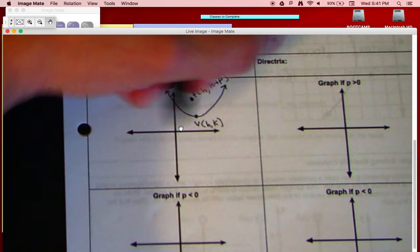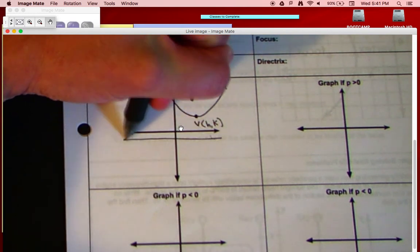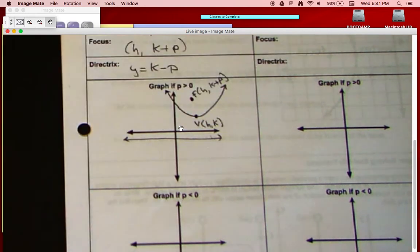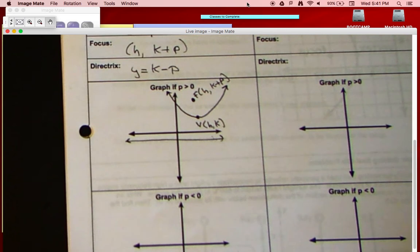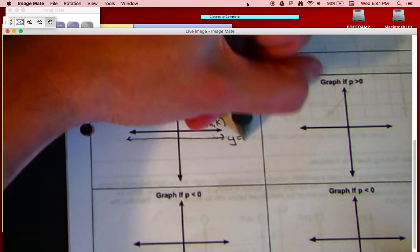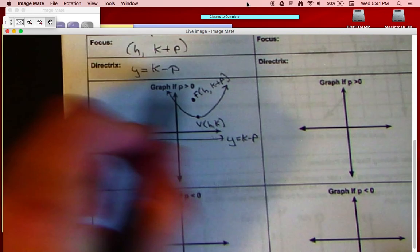And then down here on the opposite side, we've got our directrix, which, whoops, let me get that out of your way, directrix is y equals k minus p, so that's the general shape right there.